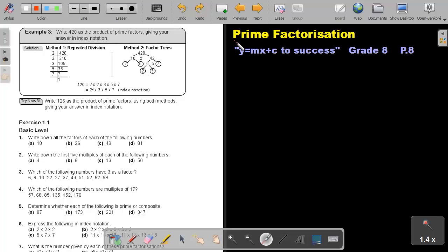In part 4, we will continue with prime factorization and look at a few examples. You will find this on page 8 in the Namibian Mathematics Grade 8 textbook y equals mx plus c to success. Now, let's start by looking at example 3. Write 420 as the product of prime factors giving your answer in index notation. Very important, index notation.